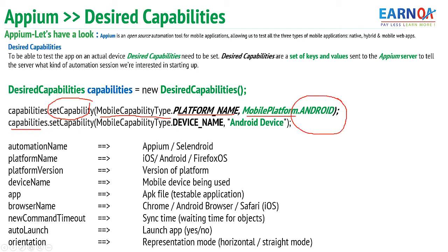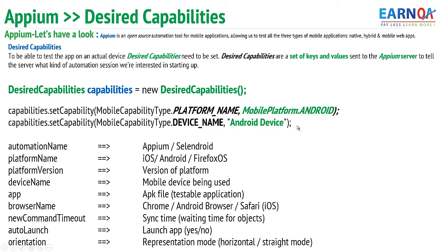On my capabilities, let me set a capability — the capability key is platform name and the value is Android. Similarly, on my capabilities let me set another capability — the device name. We set 'android device' for a real device, or 'android emulator' for a virtual device. We also need to specify the automation name — whether we want to go with Appium or Selendroid — the platform version such as Lollipop, KitKat, 4.1, 4.2, or 5.2, the device name, and the application path.